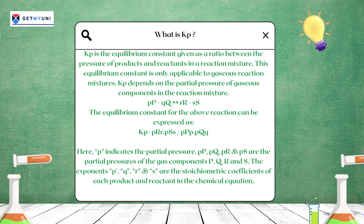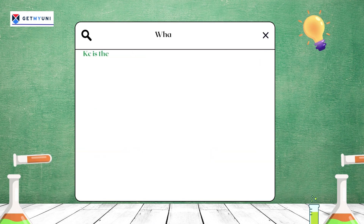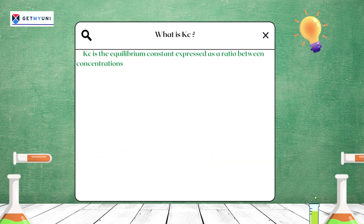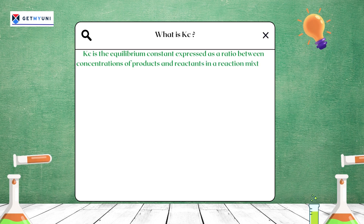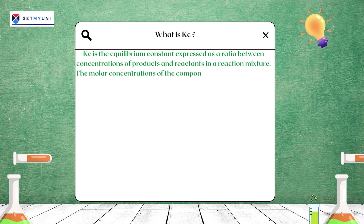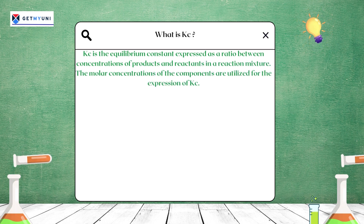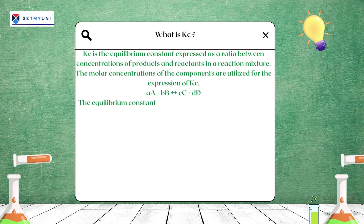Kc is the equilibrium constant expressed as a ratio between the concentrations of products and reactants in a reaction mixture. The molar concentrations of the components are utilized for the expression of Kc.